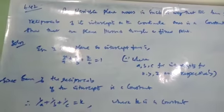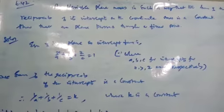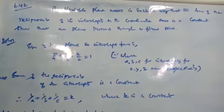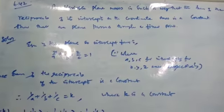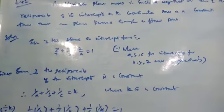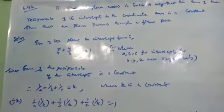The variable plane moves in such a way that the sum of the reciprocal of its intercepts on the coordinate axes is a constant. Show that the plane passes through a fixed point.